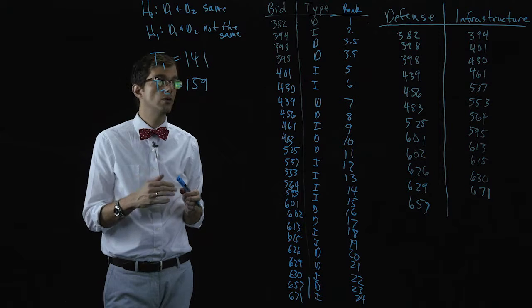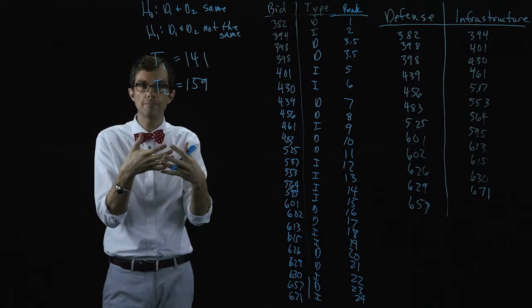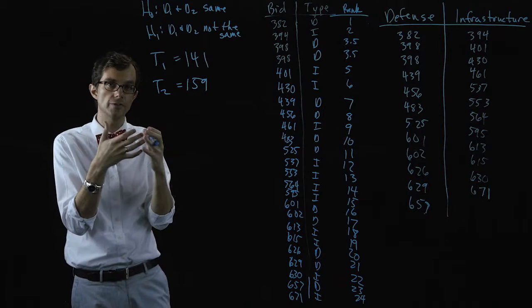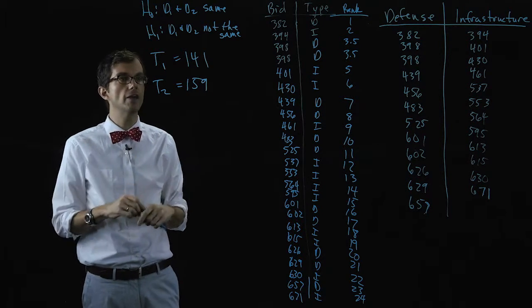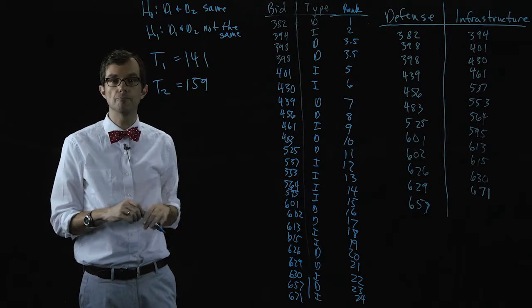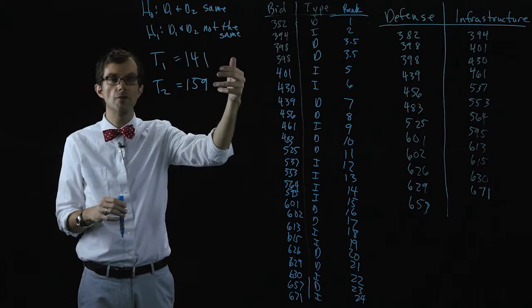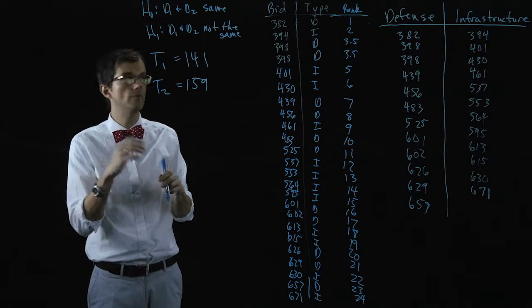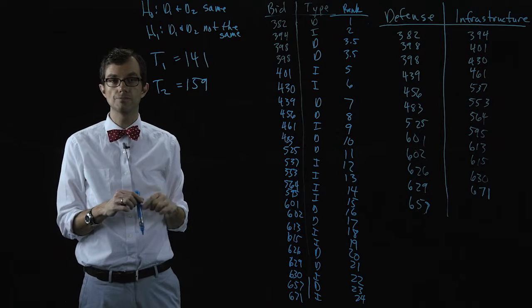So if these two distributions are exactly the same, if they have the same measure of central tendency, if one does not lie to the left or the right of the other, then you would expect these two numbers to be roughly the same. You would expect the ranks on one side and the other to be roughly the same. The same kind of number of low ranks and high ranks for each distribution.